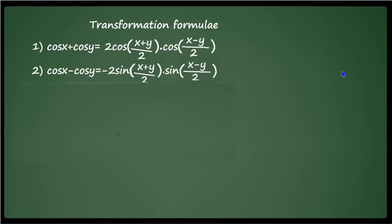In the first formula, the left-hand side is cos x + cos y and the right-hand side is 2 cos((x+y)/2) · cos((x−y)/2). The second formula: cos x − cos y = −2 sin((x+y)/2) · sin((x−y)/2). Note that the negative sign appears only in cos x − cos y.